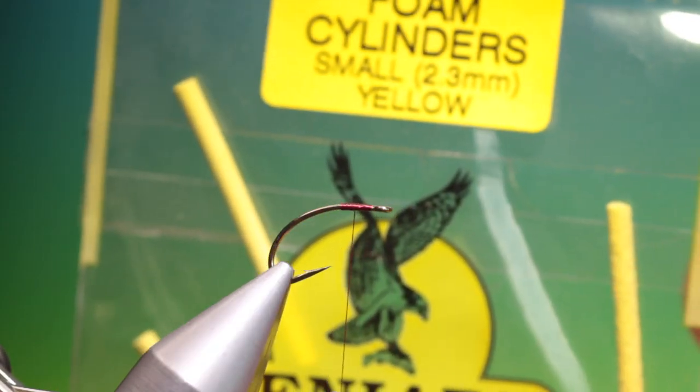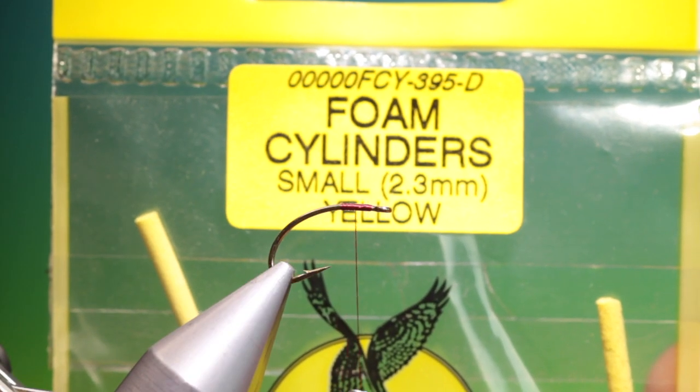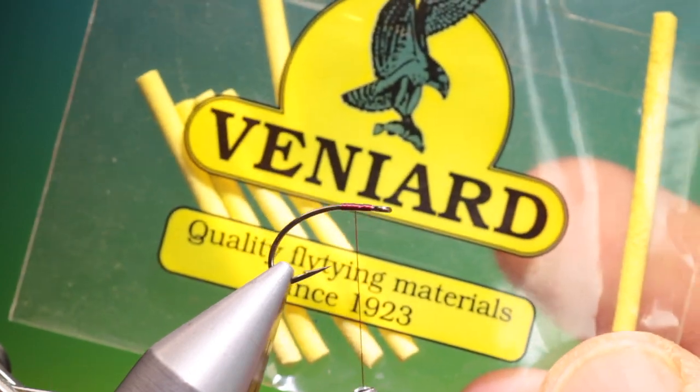Got to have this in the box, go to there and what we need is this, these are 2.3mm small yellow cylinders, foam cylinders.